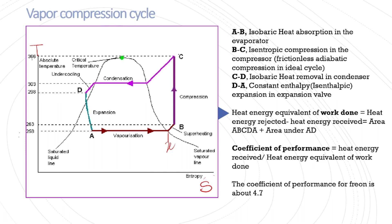B to C is isentropic compression in the compressor. As the compressor works, pressure rises and entropy should not change — meaning the gas must remain as gas throughout. The entropy represents the degree of disorder. If the gas entering the compressor starts to become liquid due to rising pressure, it will damage the compressor because liquid is incompressible. So isentropic compression is required in the compressor.